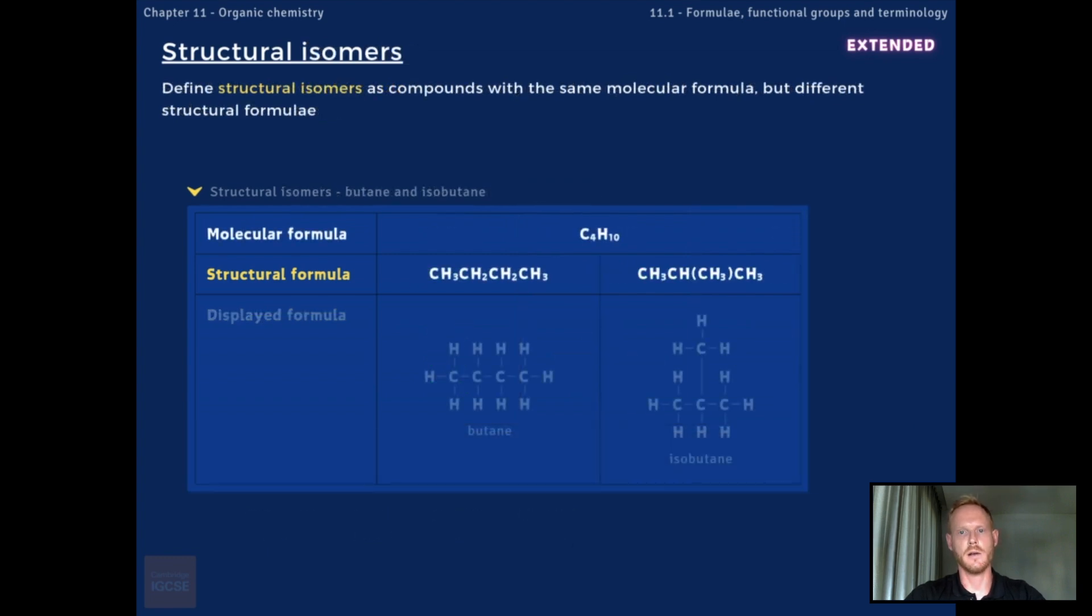Structural isomers are compounds in which two molecules have the same number of atoms, and thus the same molecular formula, but have different physical and chemical properties because of differences in structural formula. For example, butane and isobutane are structural isomers with the molecular formula C4H10. The structural formula of butane depicts a straight chain made up of two CH2 groups in the middle and a CH3 at either end. The structural formula of isobutane depicts a branch structure, where the methyl group written in brackets is attached to the second carbon in the chain.